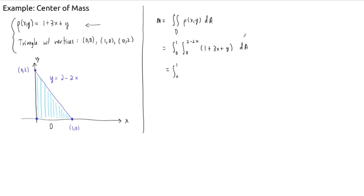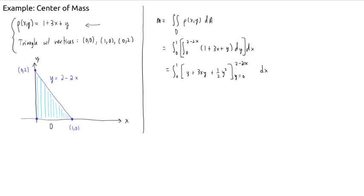This is an iterated integral — we integrate with respect to y first. The antiderivative is y plus 3xy plus one-half y squared, and the y boundaries are from 0 to 2 minus 2x. We plug in these boundaries before doing the next integral because the boundary contains x. Plugging in the upper bound gives (2 minus 2x) plus 3x times (2 minus 2x) plus one-half times (2 minus 2x) squared. Plugging in 0 for y zeros everything out.